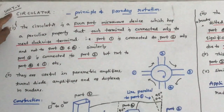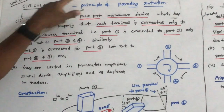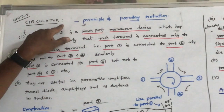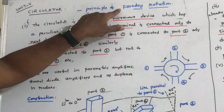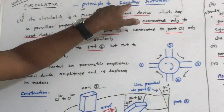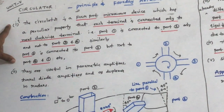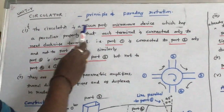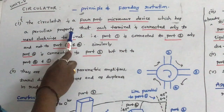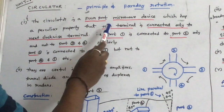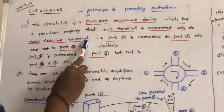Welcome to the series of video lectures on Microwave Engineering. In this session we will discuss what is a circulator. The circulator is a device which uses the principle of Faraday rotation. The circulator is a 4-port microwave device which has a peculiar property that each terminal is connected only to the next clockwise terminal.